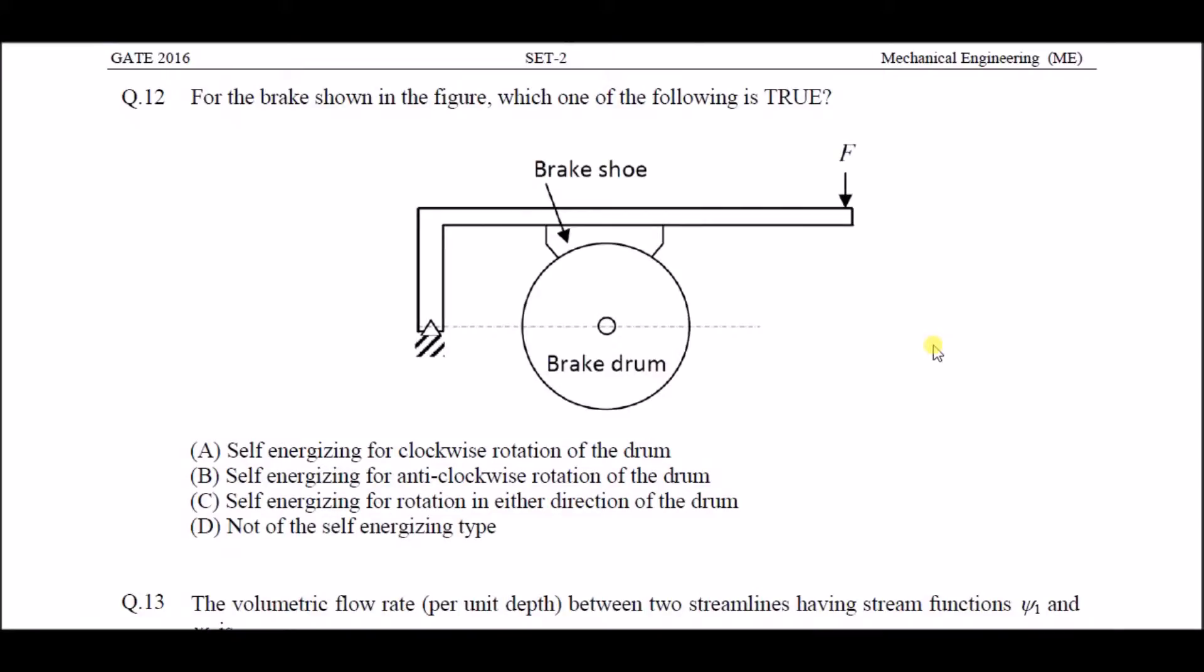Question 12: For the brakes shown in the figure, which one of the following is true? There is a brake drum, a brake shoe, and a pivoted lever, and force F is acting on the other side of the pivot.